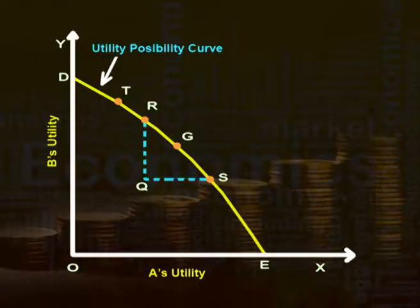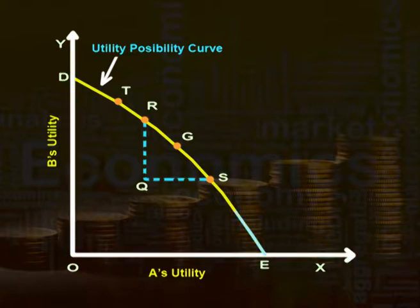This can also be explained with the help of a diagram. Here, if we move downwards on the curve DE, utility of A increases and that of B decreases. While if we move upwards towards utility curve ED, utility of B increases and that of A decreases. Most economists believe that a movement is desirable only if no one is worse off and at least one person is better off.